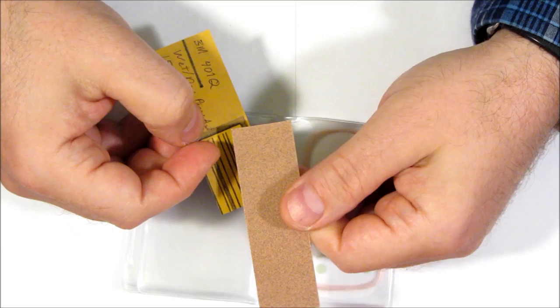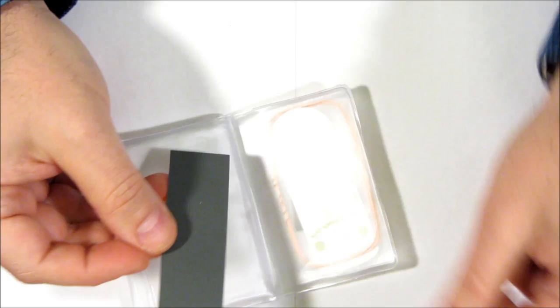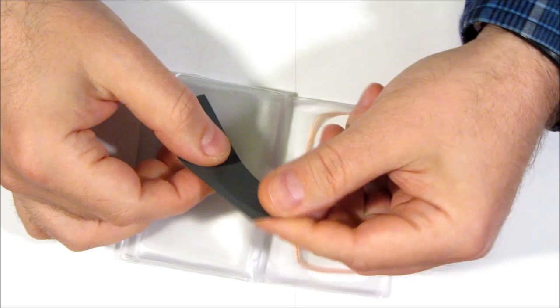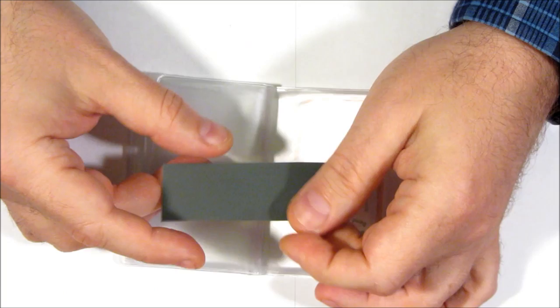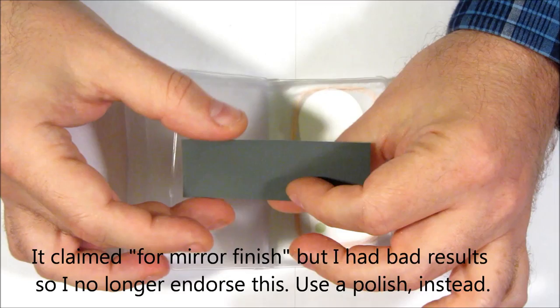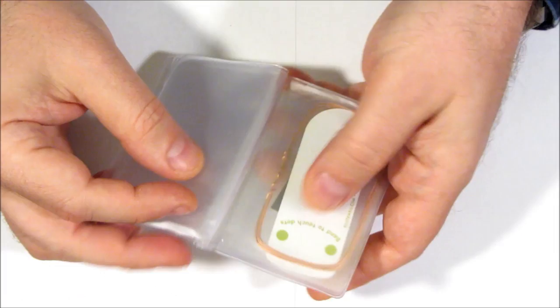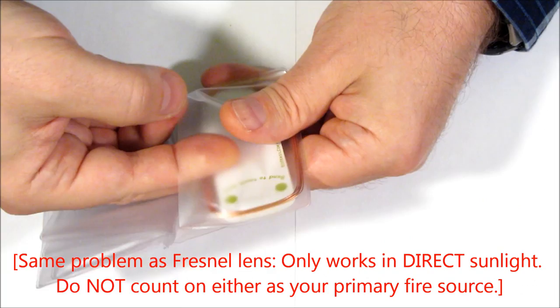This is thick coarse grit sandpaper, and this is fine grit. In theory, the fine grit can help you polish up the bottom of a can, of a soda can, to make it into a parabolic mirror. I've had somewhat luck using sandpaper, but they say you can also use toothpaste, apparently chocolate, and riverbed mud can also be used to polish the bottom of a soda can to make it into a parabolic mirror for sun collection for fire starting.